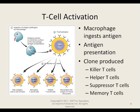T cells are often activated by macrophages. Once activated, they produce clones — copies of the T cell that divide and have different jobs. There are killer T cells, which kill antigens. There are helper T cells, which help B cells and other white blood cells, making the immune system more effective. They are so important that the HIV virus specifically impacts helper T cells.